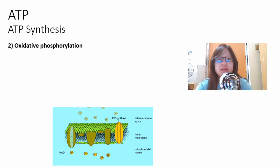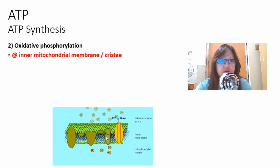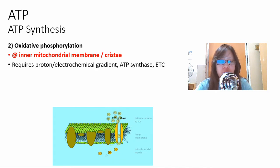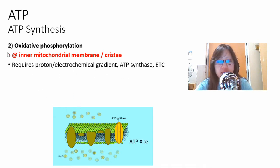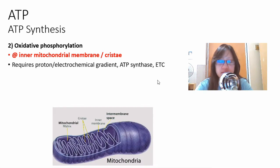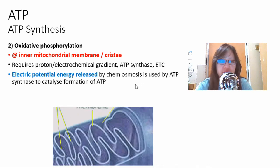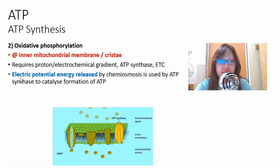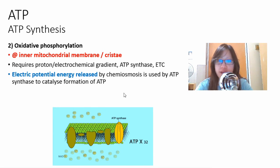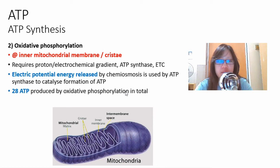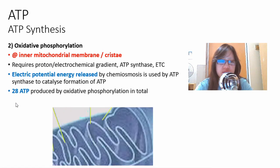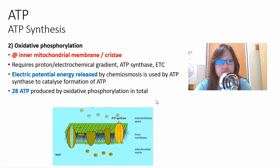However, in oxidative phosphorylation, it occurs in the inner mitochondrial membrane or cristae. It doesn't use the chemical potential energy but requires a proton or electrochemical gradient instead, as well as ATP synthase and electron transport chain. This is by electrical potential energy released by chemiosmosis. This electrical potential release is used by ATP synthase to catalyze the formation of ATP as we've seen last video, and most of the ATP is produced through this process, 28 ATP produced per glucose molecule in total.